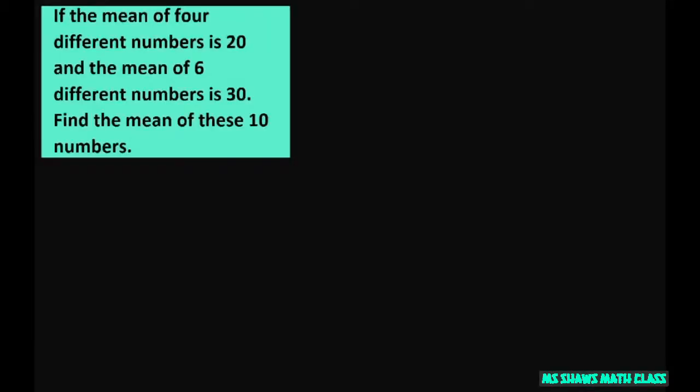We have the mean of four different numbers is 20. So let's just call those four different numbers A, B, C, D. So A plus B plus C plus D, and we're doing the mean, that means we have to divide it by 4 equals 20.